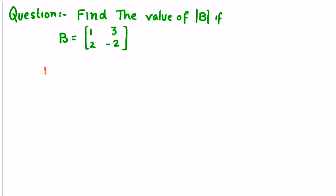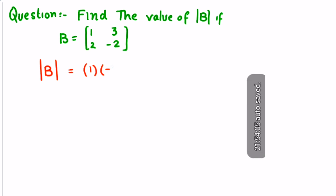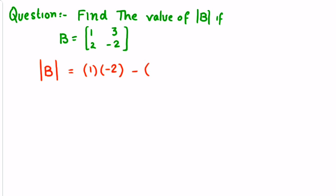Dear students, we can find B determinant when we multiply these two elements: 1 multiplied by minus 2, minus the multiplication of these two elements, 2 multiplied by 3.